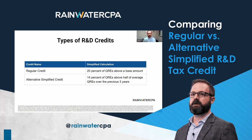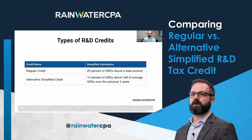We've got two ways we can calculate the credit, and both have their pros and cons. The regular credit is 20% of the QREs above a base amount, and that's a set formula. And then we've got the alternative simplified credit, which is 14% of those QREs above half of the average QREs over the previous three years.